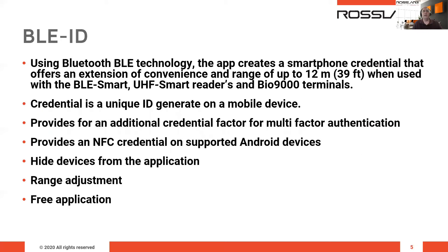The BLE ID uses Bluetooth technology so the app creates a smartphone connection that offers extension of convenience and range up to 12 meters, adjustable, when you use the BLE Smart, U-Adjust Smart Readers, and Bionic Townsend Terminals. The credential is a unique ID generated on the mobile device — each credential is a unique pair per application on the device. The BLE ID can be sent via email if you have an email account set on the device. It also provides an NFC credential on supported Android devices.